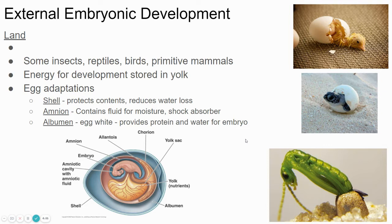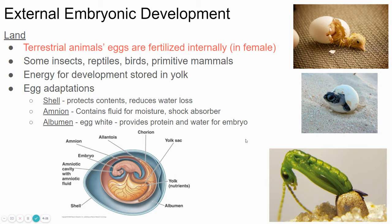Organisms that live on land can't reproduce that way because land is dry — the eggs would just dry up. Some land organisms, like birds and reptiles, lay eggs that are waterproof, with a little watery environment inside. There's usually energy stored in a yolk that the embryo uses as it grows and develops, and then it eventually hatches out of the egg. So baby chicks, turtles, and insects all hatch out of eggs.